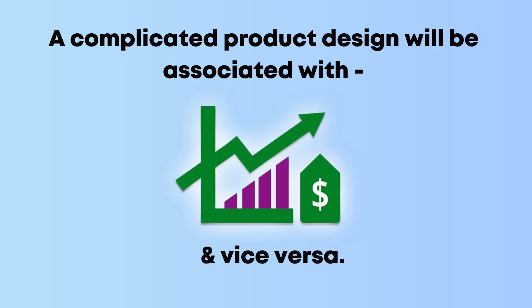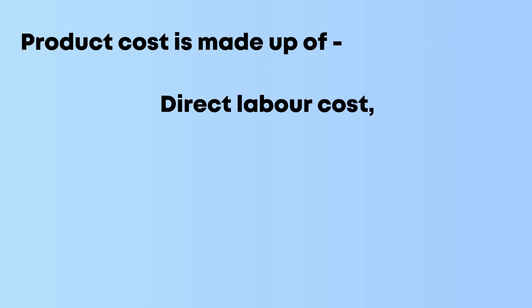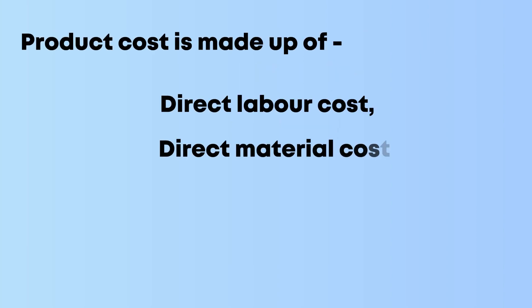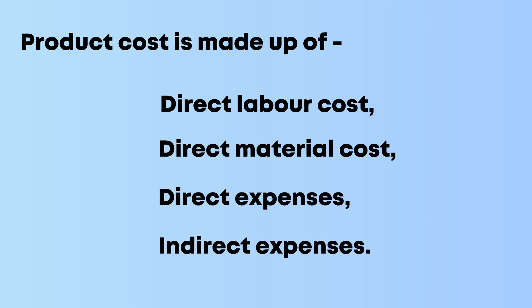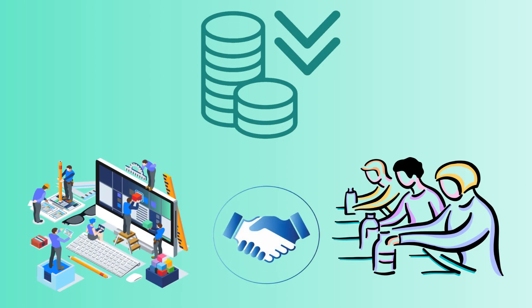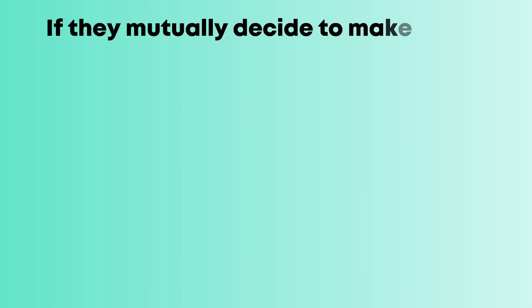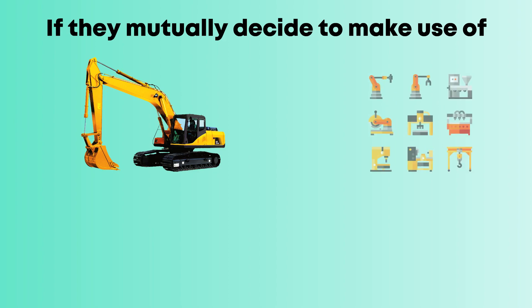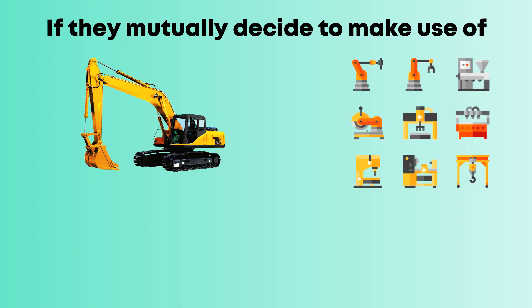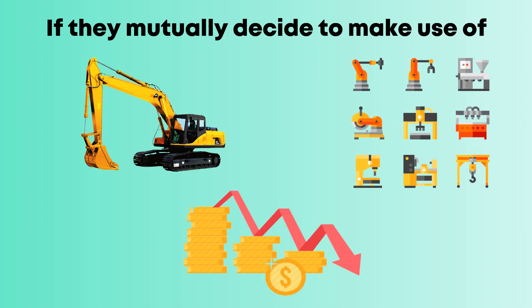Product cost is made up of direct labor cost, direct material cost, direct expenses, and indirect expenses. Product costs can be reduced if better mutual understanding exists between the design department and the manufacturing division — if they mutually decide to make use of the existing equipment with a little additional tooling, it may be possible to reduce the cost.